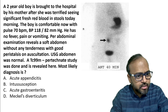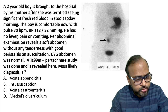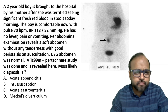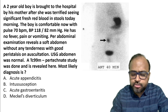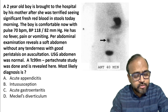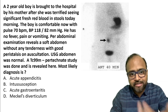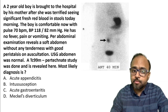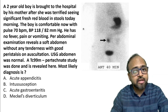He has no fever, pain, or vomiting — no clinical symptoms. Per abdominal examination reveals a soft abdomen without any tenderness with good peristalsis on auscultation. So why did he have fresh blood in his stools, and that too a significant amount? An USG abdomen was done, but it turned out normal. A Technetium pertechnetate study was then done and is shown here.